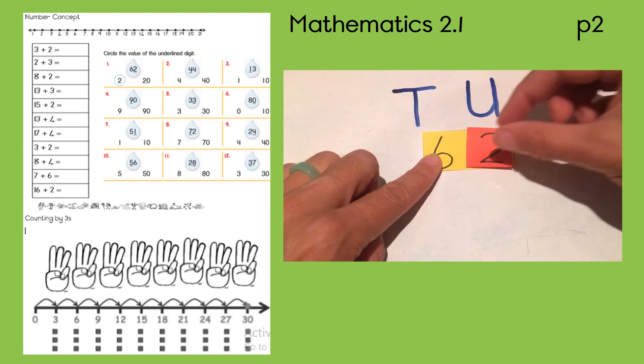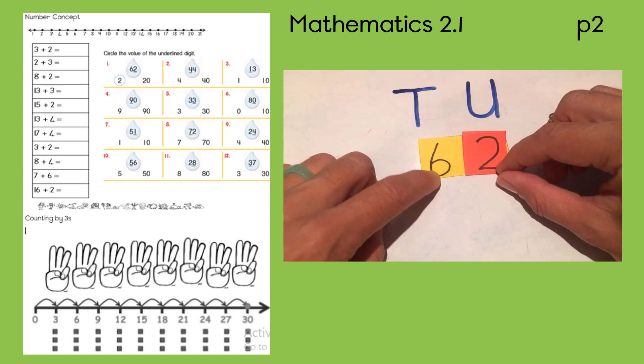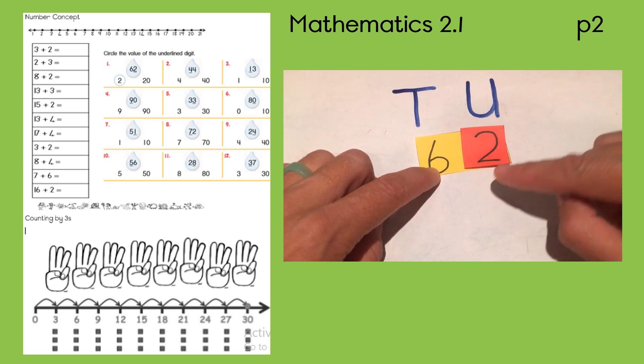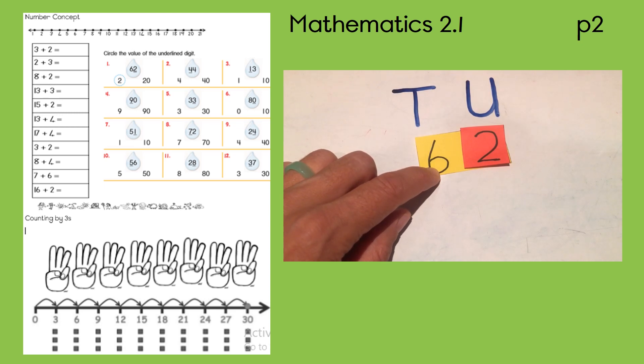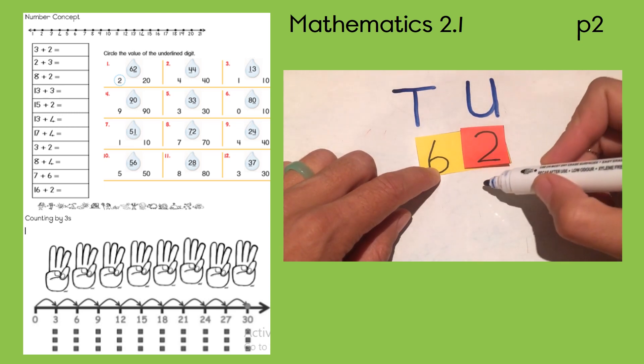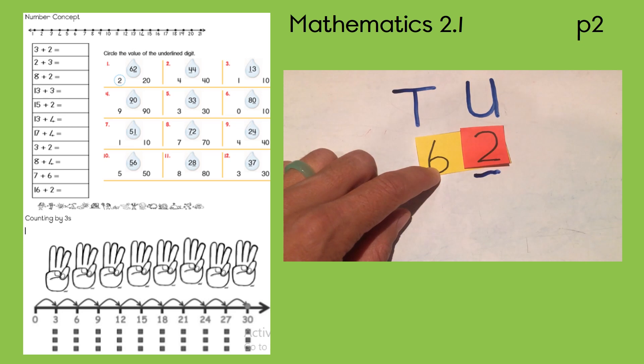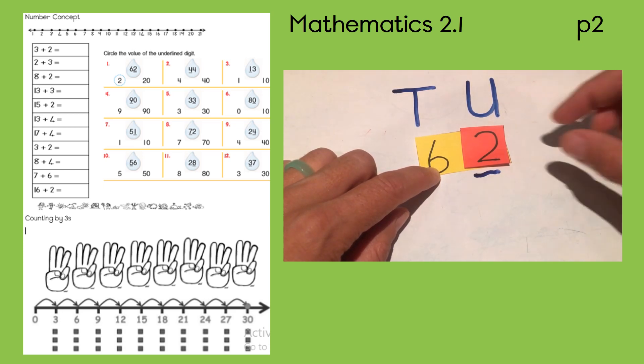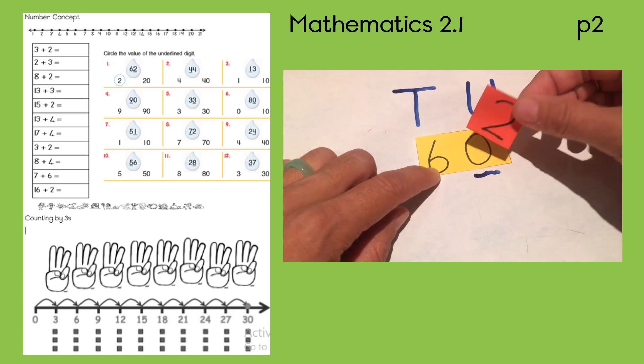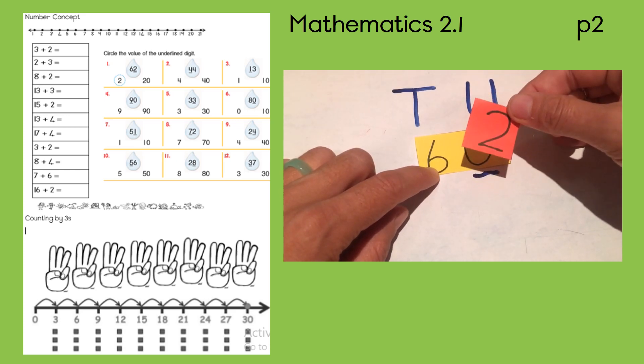So that is only two loose blocks. So they underlined the two and they want to know what is the value of the two in that number. And then we know it's at the units. So the value is two, not 20, only two.